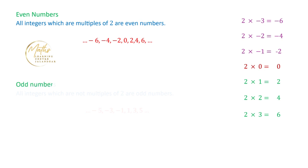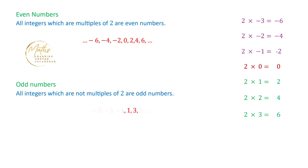Next we have odd numbers. All integers which are not multiples of 2 are called the odd numbers. The integers not in the list of multiples of 2 are 1, 3, 5 and so on, and the negative odd integers are minus 1, minus 3, minus 5 and so on. These are the definitions for even numbers and odd numbers.